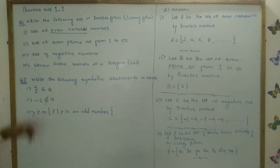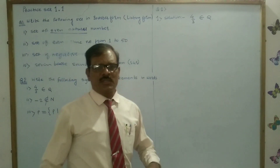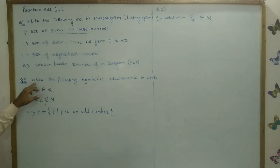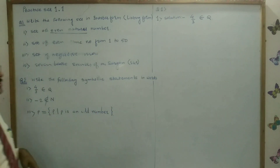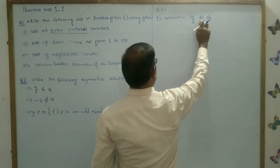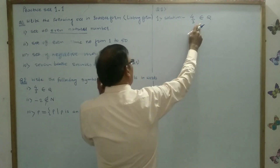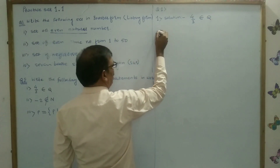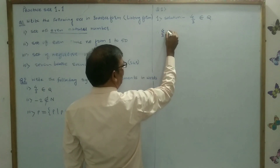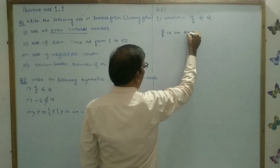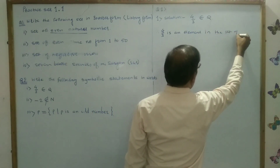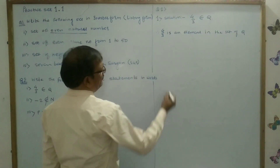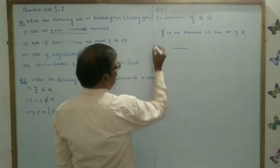Now let us start question number 2. So here, write the following symbolic statement in words. A symbolic link is given to you and we can write this in word form. See: 4 by 3, this symbol is epsilon — belongs to — the set of cube. Therefore, 4 by 3 is an element in the set of cube. This is the words form.